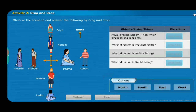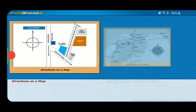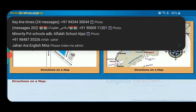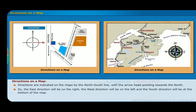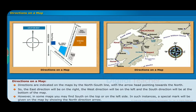Now let us look at how directions are shown on a map. Directions are indicated on maps by the north-south line with an arrowhead pointing towards the north. So the east direction will be on the right, the west direction will be on the left, and the south direction will be at the bottom of the map. However, in some maps you may find south on the top or on the left side. In such instances, a special mark will be given on the map by showing the north direction arrow.